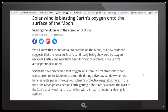The article states we all know that there is no air to breathe on the moon, but new evidence suggests that the lunar surface is continually being showered by oxygen escaping earth and may have been for billions of years. Now they always have to throw that billions of years. Let's be realistic here folks, I don't care how smart these scientists are, they are not going to tell us anything about what happened billions of years ago.